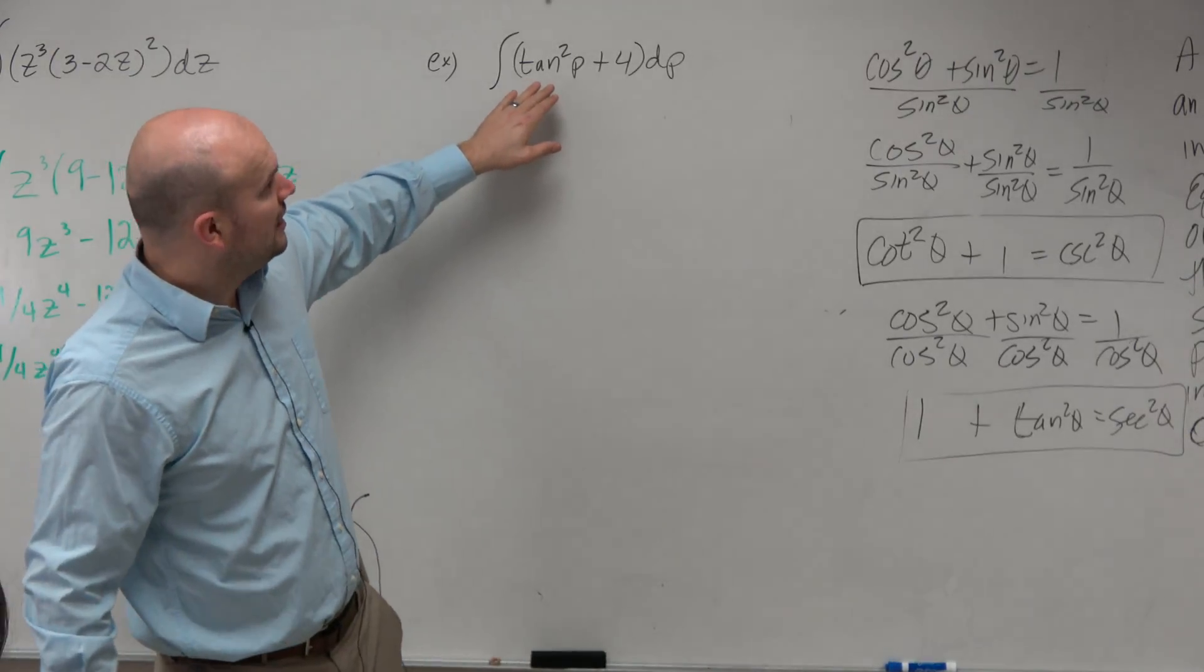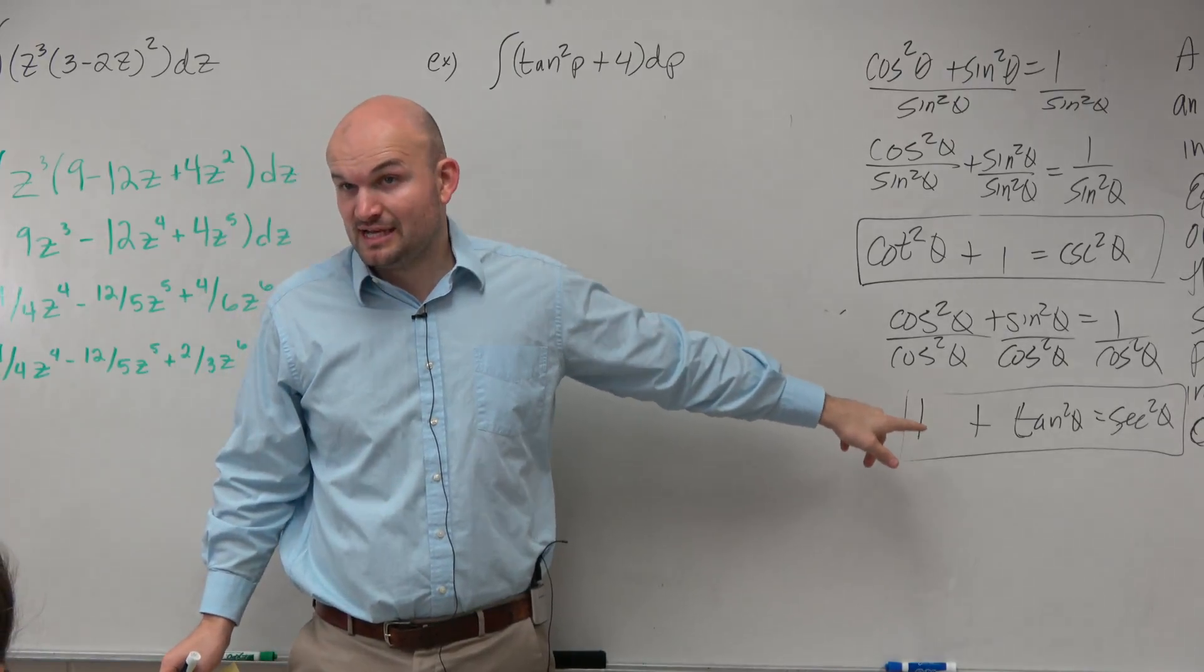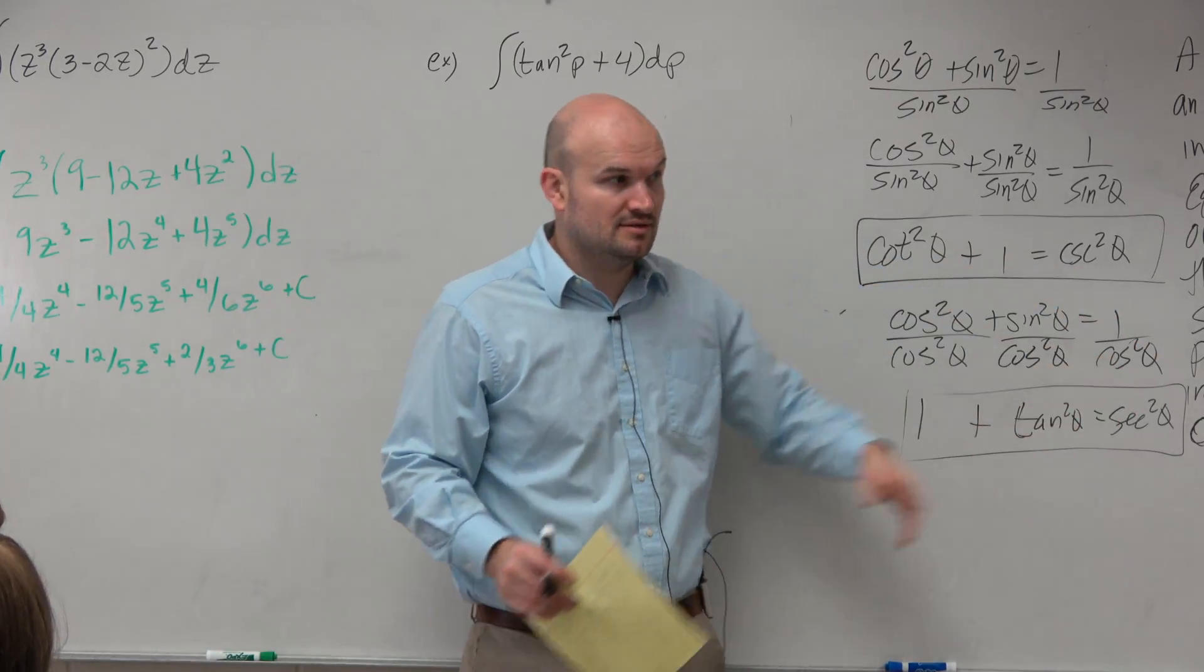We know we can't take the general integral here with tangent squared. But I do know I can rewrite tangent squared as, if I just subtract the 1 to the other side, as secant squared minus 1. Yes?